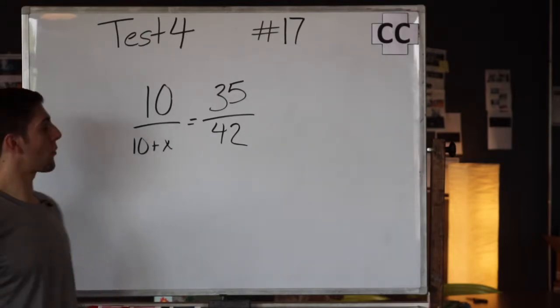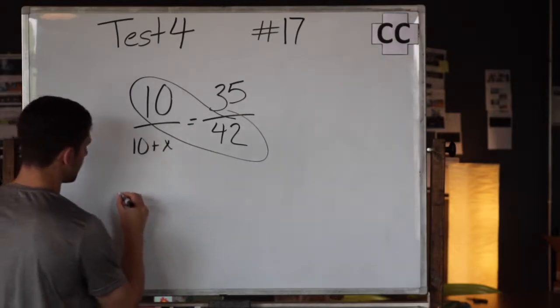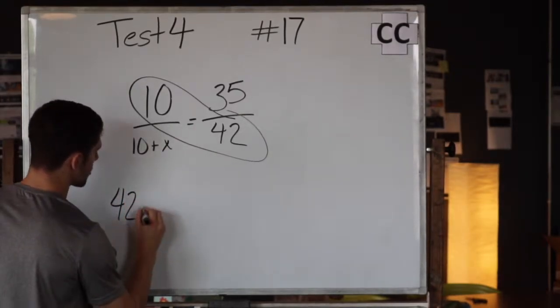So because we have a proportion here, we can cross multiply these. We're going to do 10 times 42, this is going to give us 420.